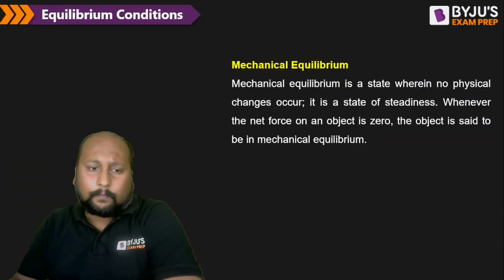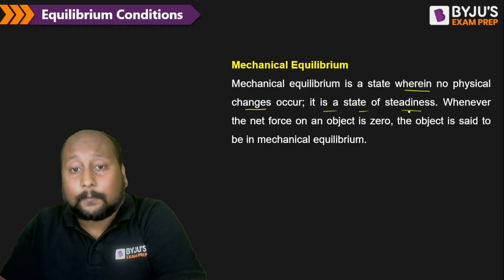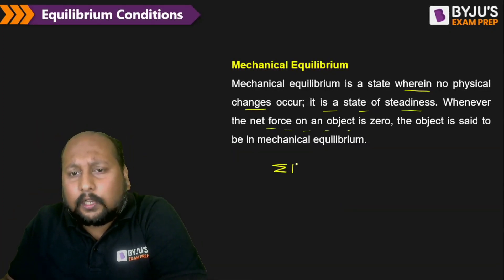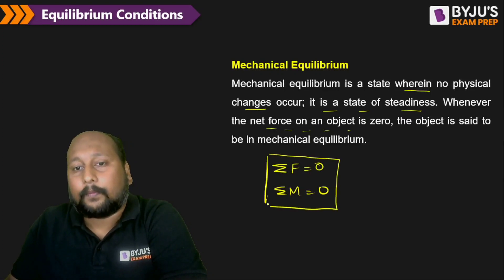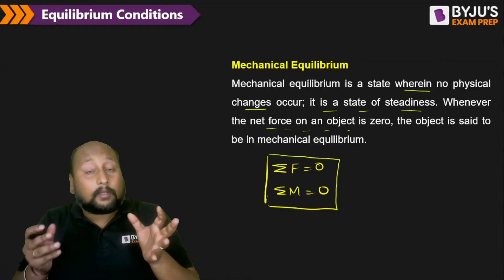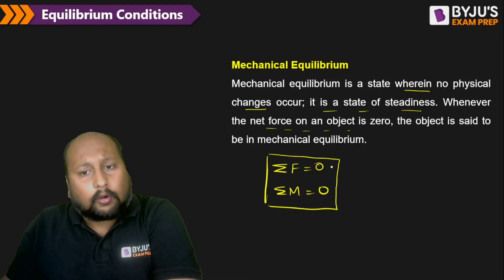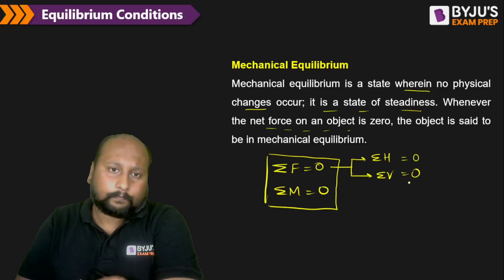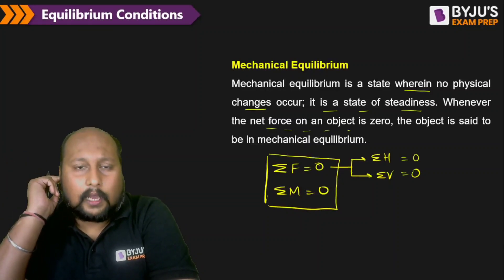Mechanical equilibrium means a state where no physical changes occur — a state of steadiness. Whenever the net force on an object is zero, it is said to be in mechanical equilibrium. But that alone is not sufficient: even the net moment must be equal to zero. Only then can we say the body is in equilibrium. The total force in the horizontal direction and in the vertical direction must both equal zero.